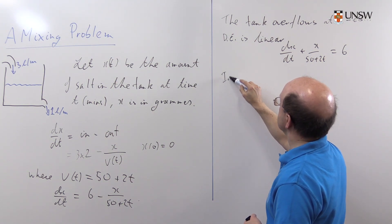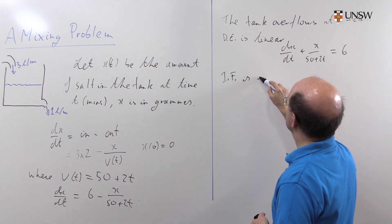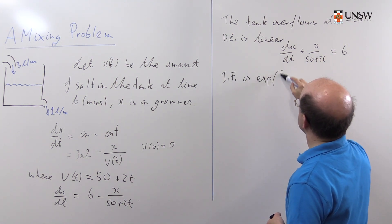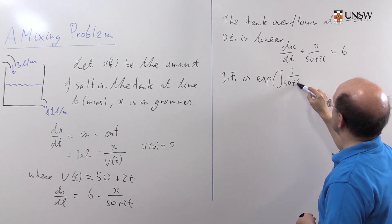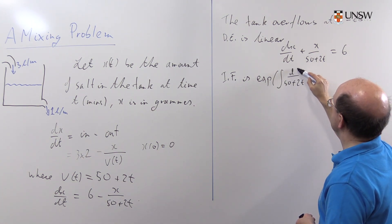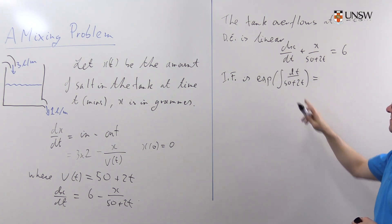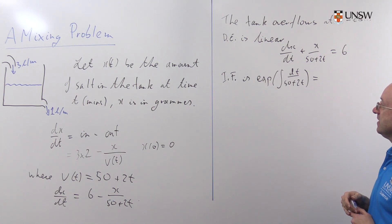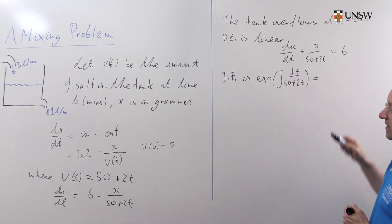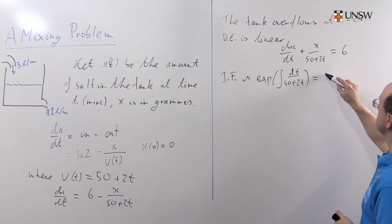So the integrating factor is e to the integral of 1 over 50 plus 2t dt. Well, integrate 1 over 50 plus 2t with respect to t, and we're going to get 1/2 log of 50 plus 2t. Take the exponential of that, and we're going to get 50 plus 2t to the power of 1/2, or the square root of 50 plus 2t.